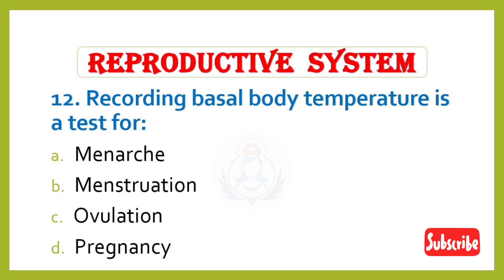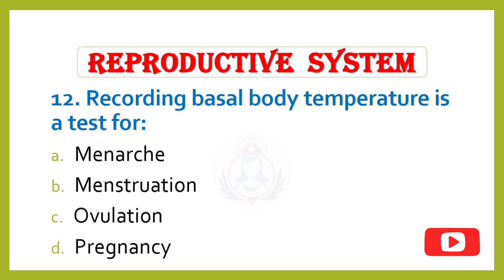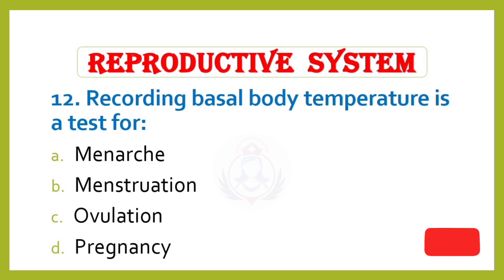Question 12. Recording basal body temperature is a test for: Option A – Menarche, Option B – Menstruation, Option C – Ovulation, Option D – Pregnancy. Correct answer is Option C: Ovulation.